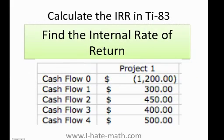Let's say that you have a problem like this one. They ask you to find the internal rate of return, and they give you a bunch of cash flows: negative 200, 300, 450, 400, and 500.